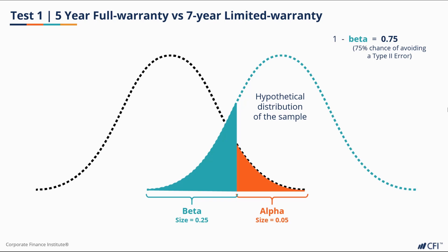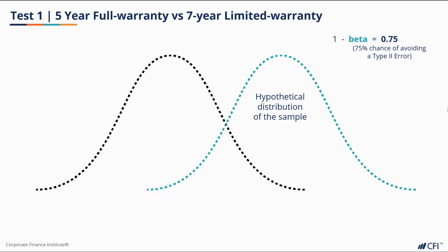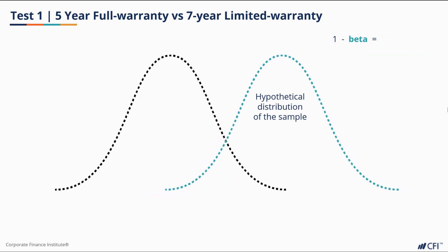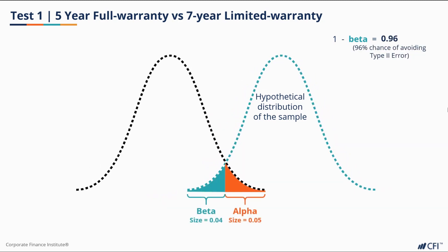We talked earlier about how our test might need to be more sensitive. By increasing our sample sizes, we decrease the spread of our distributions, which shrinks the beta value. Later in this chapter, we'll apply a power analysis method to estimate a better sample size for our test based on the beta value we desire.